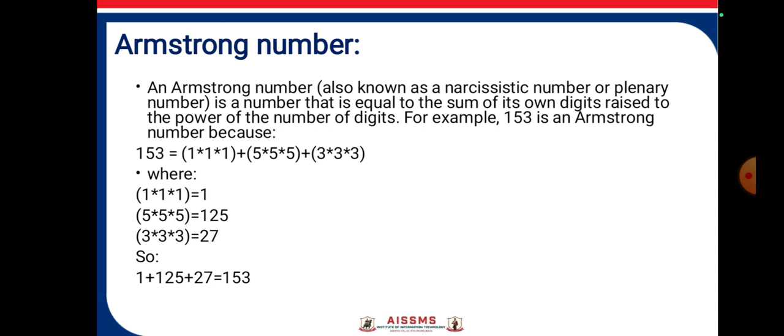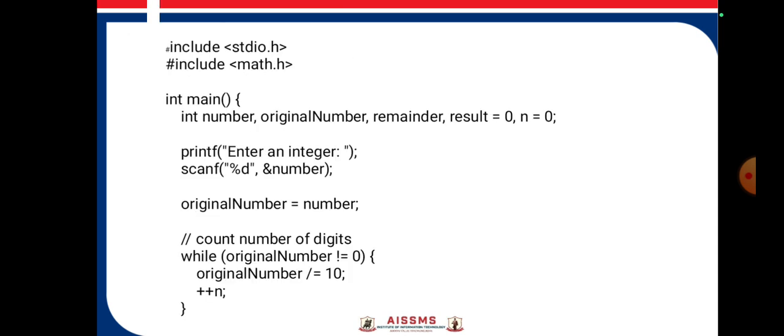So 153 is an Armstrong number. Next we have to see the programming code. First we have to use the header file stdio.h for input-output functions. Math.h is used for mathematical functions like power. Then we declare the variables: number, originalNumber, remainder, result,